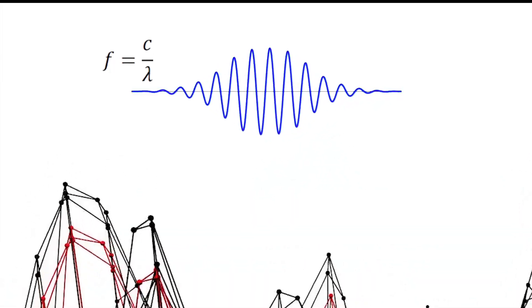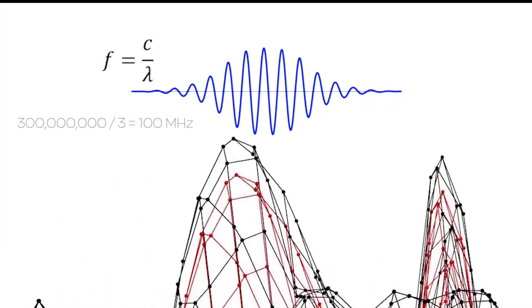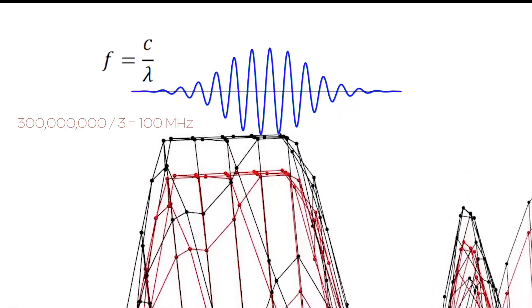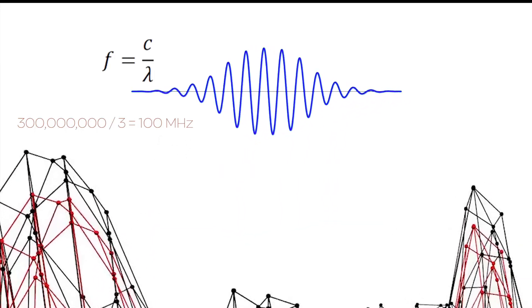So given a radio wave that has a wavelength of 3 meters, the frequency will be a hundred million Hertz, or 100 megahertz, where megahertz means 10 to the power of 6.